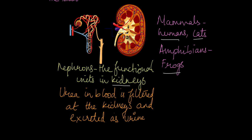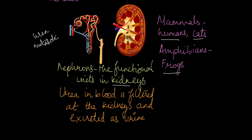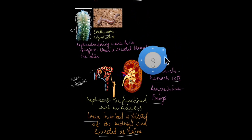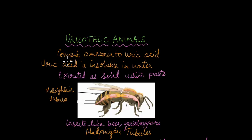Other ureotelic organisms include mammals like humans and cats, and amphibians like frogs. All of these animals have kidneys, which filter the blood. Inside the kidneys are structures known as nephrons — the functional units of the kidney. It is at the nephrons that urea from the blood is filtered out, and the urea is then excreted in the form of urine.